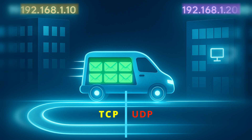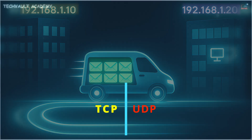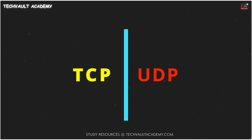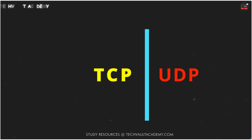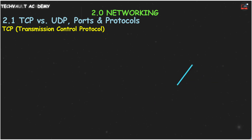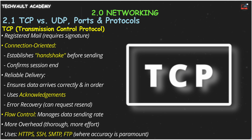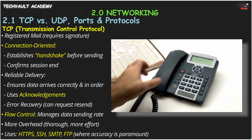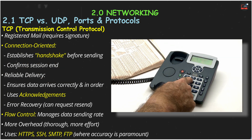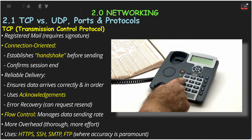Let's compare our two main packaging services: TCP, Transmission Control Protocol, and UDP, User Datagram Protocol. TCP is like using registered mail that requires a signature — it's connection-oriented. It establishes a formal handshake before sending data and confirms when it's done. Think of it as making a phone call and waiting for the other person to say hello before you start talking.